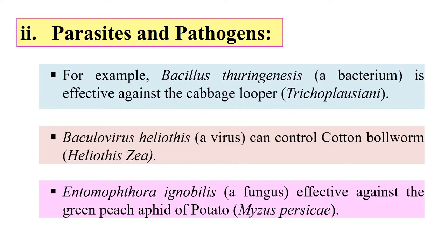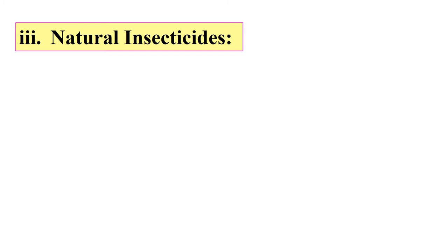Next, natural insecticides. These are certain chemical compounds obtained from microbes or plants. These chemicals are obtained from natural sources and they kill insects, which is why they fall under the category of natural insecticides and also bio insecticides.